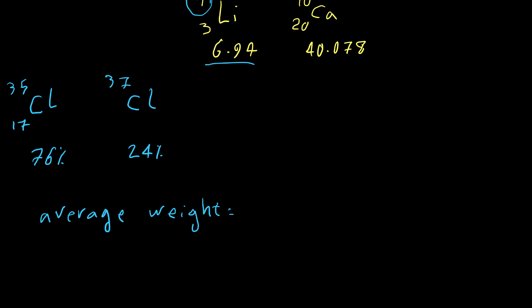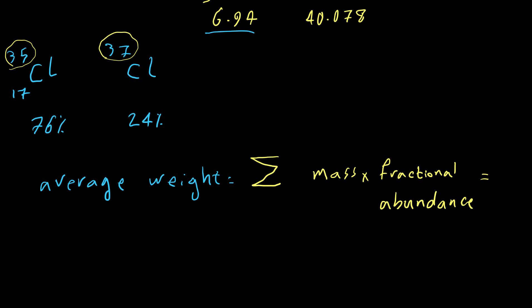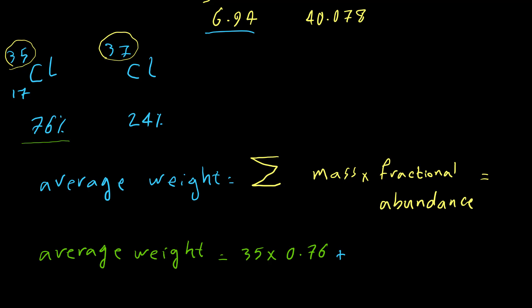The equation is: average weight equals the sum of (mass of each isotope times its fractional abundance). For this example, we assume the mass of each isotope equals the mass number to make it easier. So the average weight for chlorine equals 35 times its fractional abundance. The abundance is 76%, but as a fraction that is 0.76, not 76%. For the second isotope, mass is 37 and fractional abundance is 0.24.